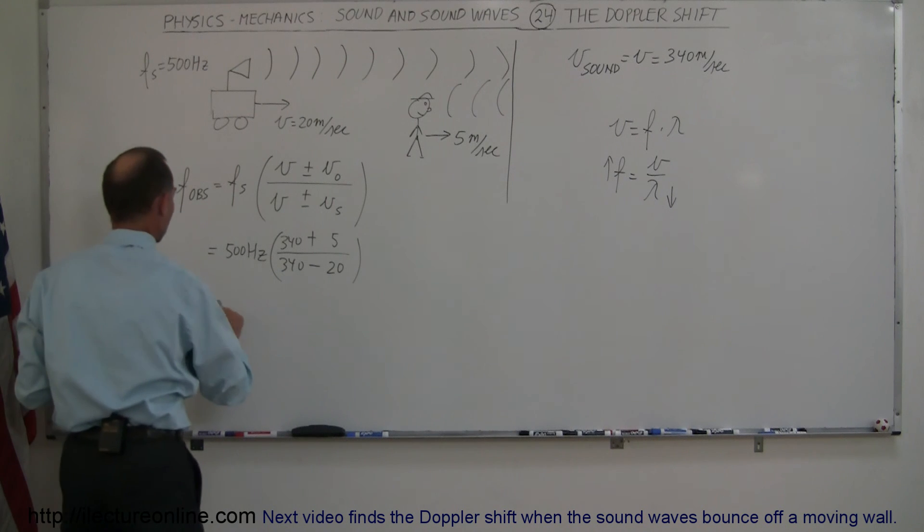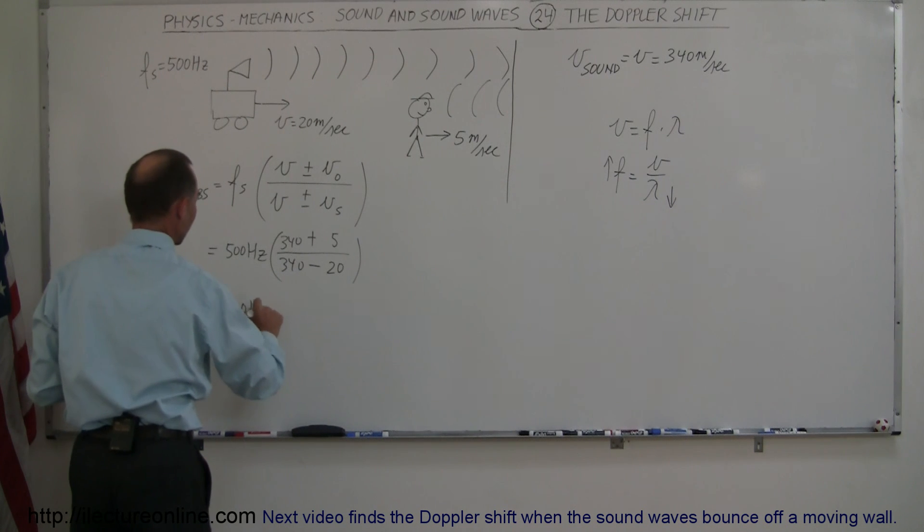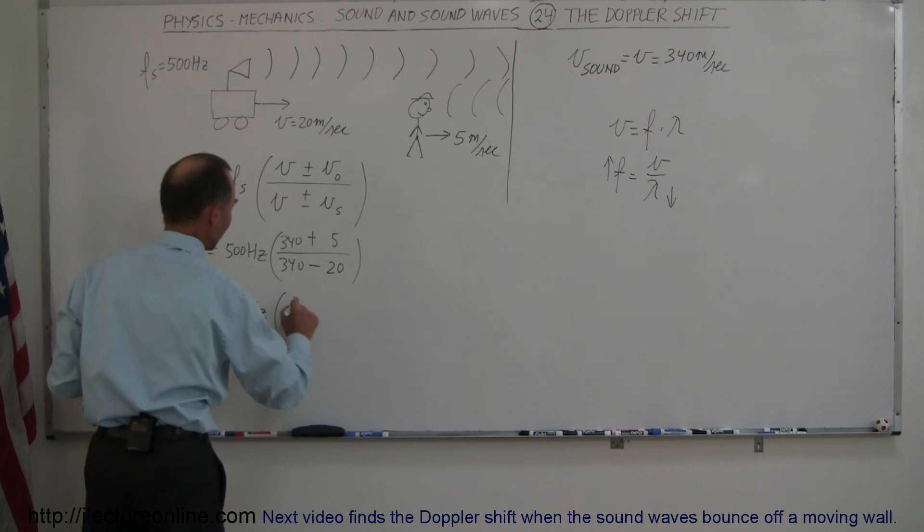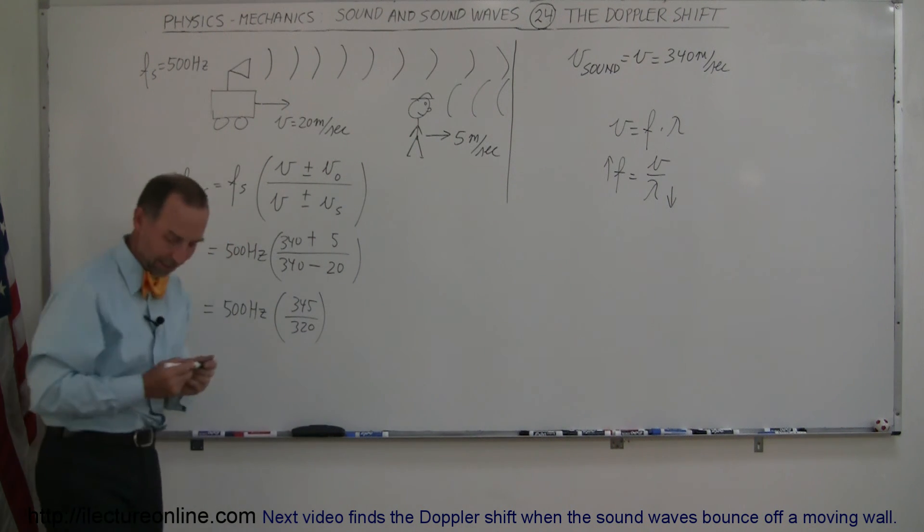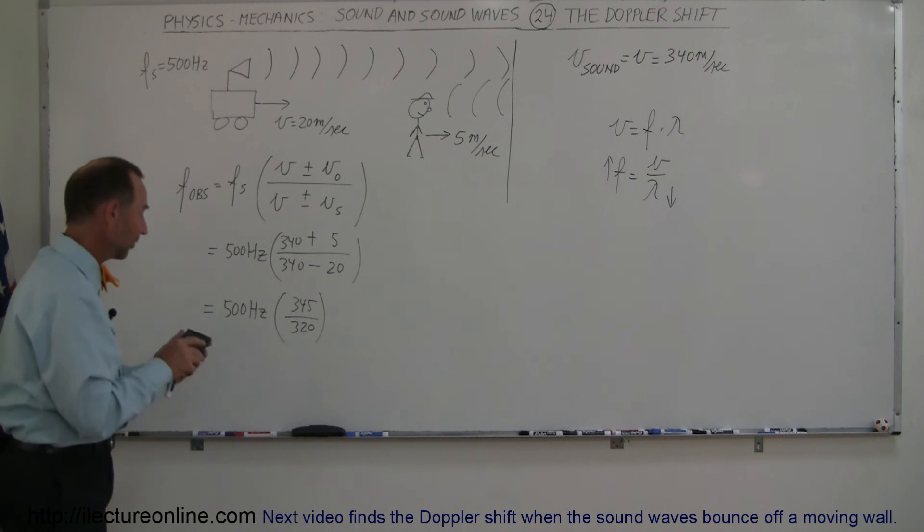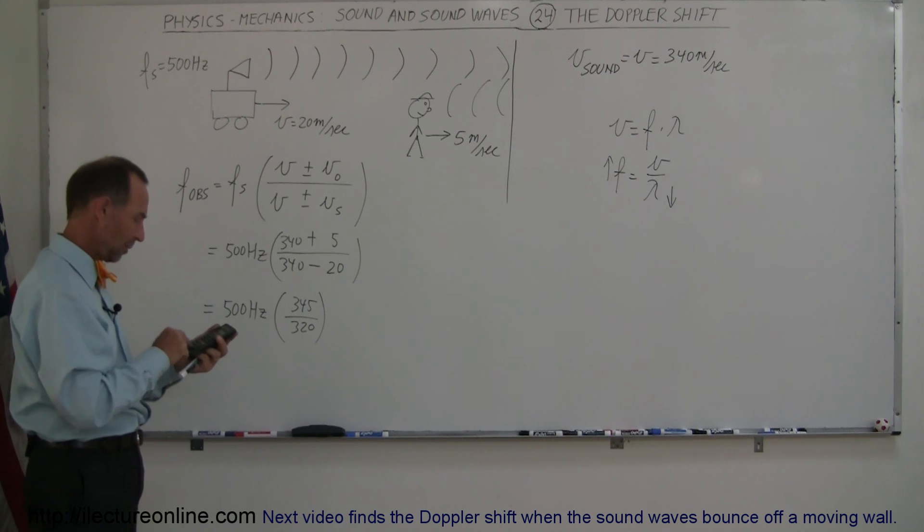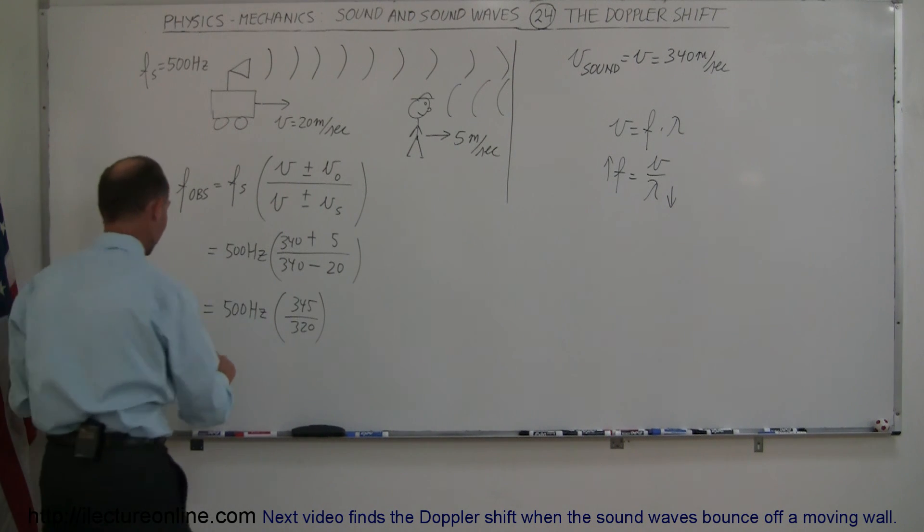The frequency observed in this case is going to be 500 Hz, times 345, divided by 320, and let's find out what that number is. So we have 500, times 345, divided by 320, and we get 539 Hz in this case.